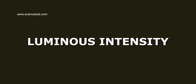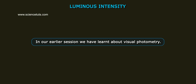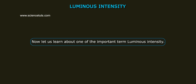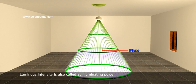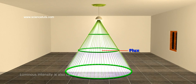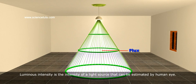Luminous intensity. In our earlier session, we have learned about visual photometry. Now let us learn about one of the important terms: luminous intensity. Luminous intensity is also called illuminating power. Luminous intensity is the intensity of a light source that can be estimated by the human eye.